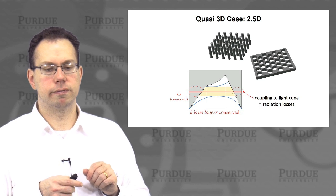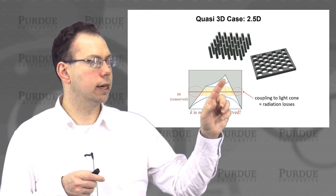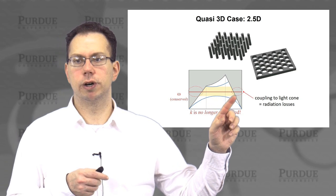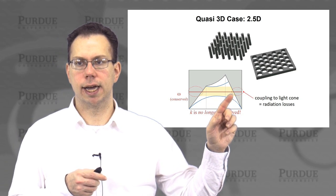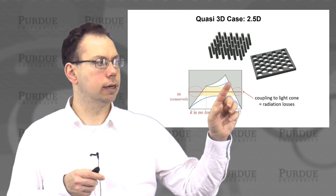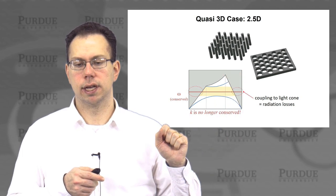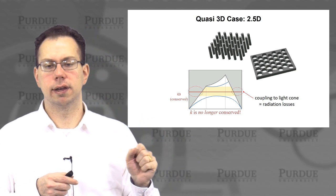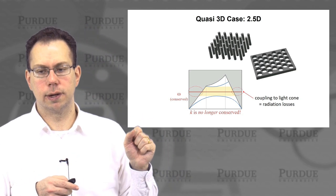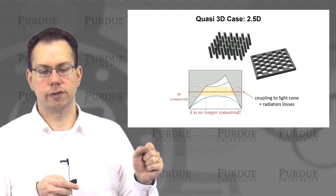But if we move below the light line, which is the region shown in yellow here, then we can have both a photonic band gap and index guiding in the z direction — basically above or below these slabs. And so this is kind of like a hybrid between the fiber optics we talked about earlier as well as the 2D photonic crystal waveguide that we were discussing.